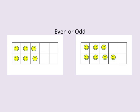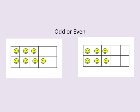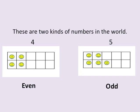Even or odd, odd or even — these are two kinds of numbers in the world.